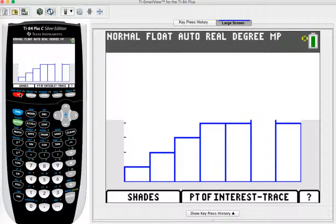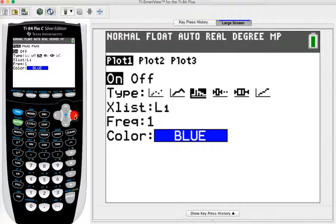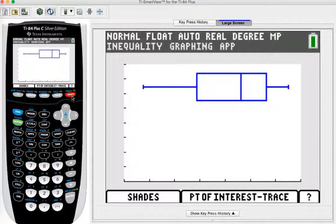Again, I go to stat plot. I'll choose number one. And instead of the histogram, this time I'm going to choose box and whisker. I hit enter and graph. And now I have a box and whisker plot.